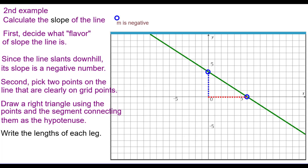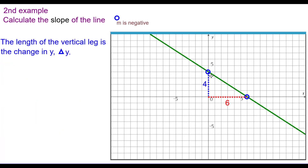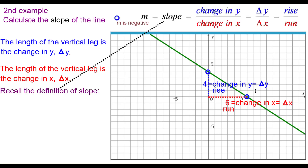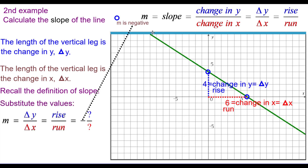Write the length of each leg: 4 units for the vertical and 6 units for the horizontal. The vertical leg is the change in y, delta y — we also call that the rise. The horizontal leg, 6, is called the change in x, delta x — we sometimes call that the run. Recalling the definition of slope: change in y over change in x, rise over run. The slope is negative, so negative 4 over 6, which simplifies to negative 2 thirds. The slope of this line is negative 2 thirds.